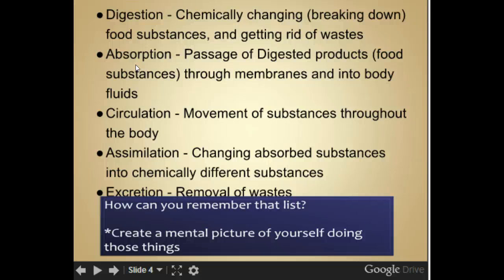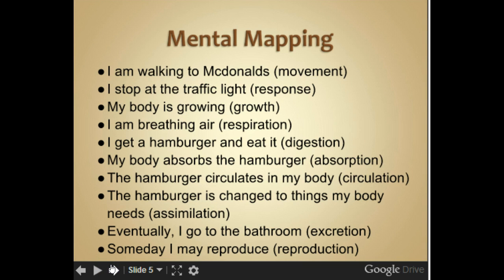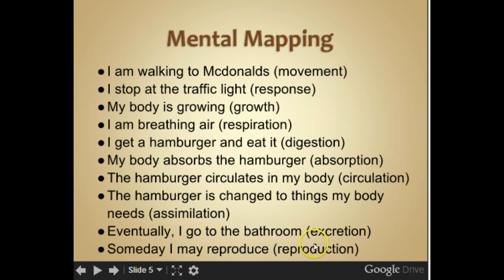To remember that list, create a mental picture of yourself doing these things. For example: I'm walking to McDonald's — that's movement. I stop at a traffic light — that's responsiveness. My body is growing — growth. I'm breathing air — respiration. I get a hamburger and eat it — digestion. My body absorbs the hamburger — absorption. The hamburger circulates in my body — circulation. It's changed to different things my body needs — assimilation. Eventually I go to the bathroom — excretion. And someday I may reproduce — reproduction.